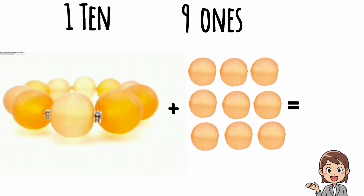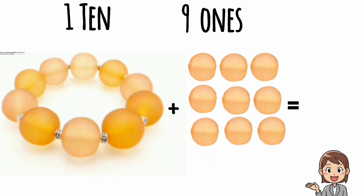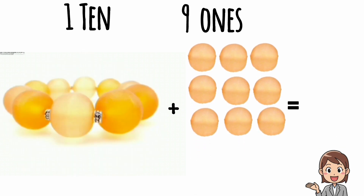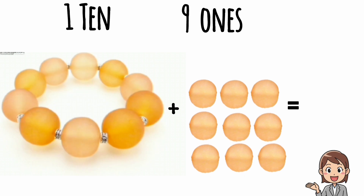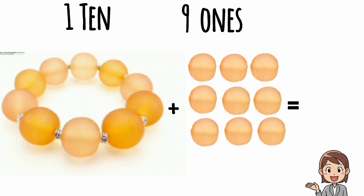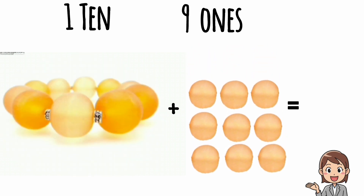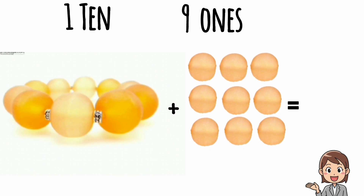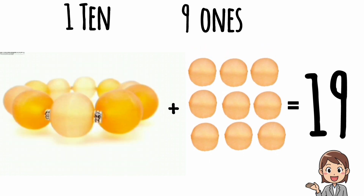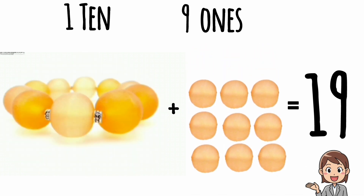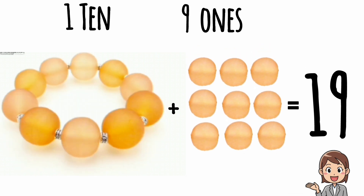We have one bracelet and nine beads. One bracelet means one ten and nine beads means nine ones. So one ten and nine ones make nineteen.